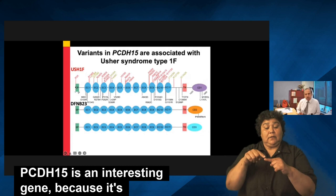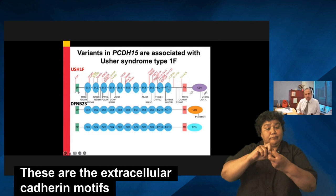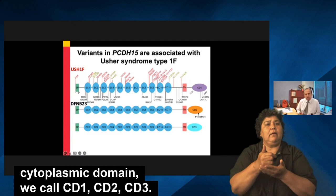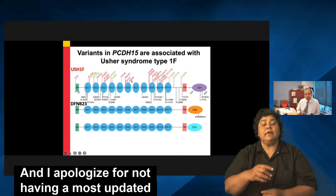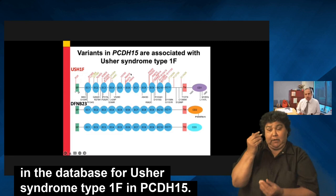PCDH15 is an interesting gene because it encodes a protein with three alternately spliced cytoplasmic domains. It has a signal peptide at the N-terminus, 11 cadherin repeats — these are extracellular cadherin motifs involved in cell-to-cell interaction — a single transmembrane domain, and three alternately spliced cytoplasmic domains we call CD1, CD2, and CD3. There are over 100 different mutations reported in the database for Usher syndrome type 1F in PCDH15.